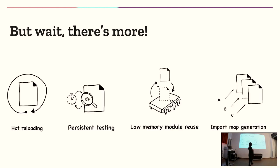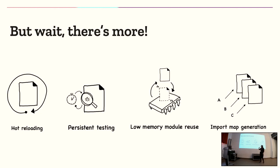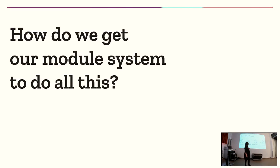That brings us to other interesting use cases: low-memory module reuse, where a microcontroller running JavaScript wants to talk about a module completely isolated from its bindings in order to instantiate it in multiple ways. We also have the hot reloading case, testing frameworks wanting to do persistent testing by manipulating the module system. So the question is: how do we get our existing module system to fix this?